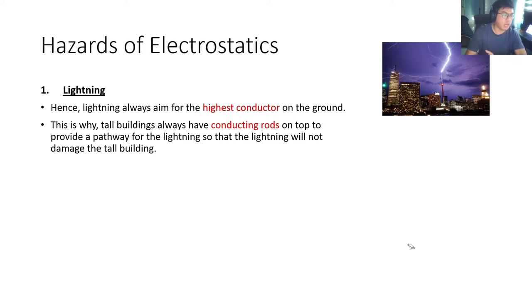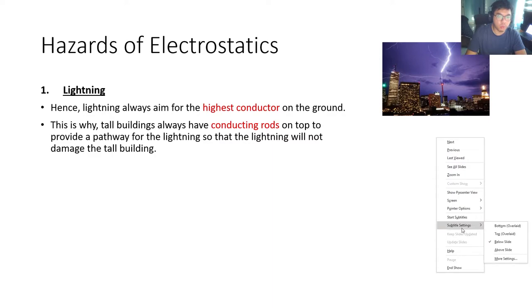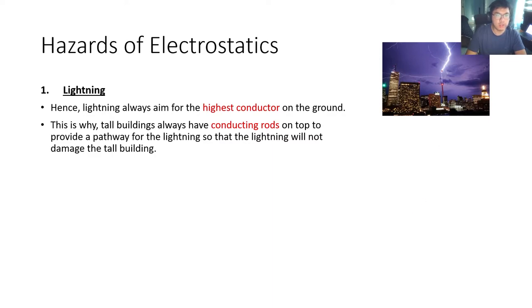This is why tall buildings have conducting rods on the top, to provide a pathway for the lightning so that it will not damage the buildings. These conducting rods are earthed and not connected to the other parts of the building. So when lightning hits the building, it will hit this conducting rod and safely go to the ground without damaging the building.